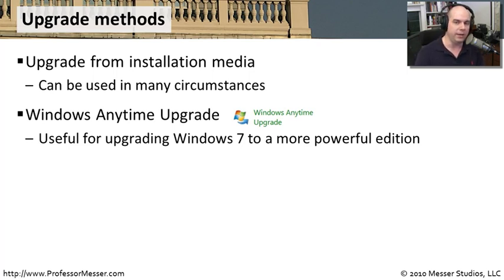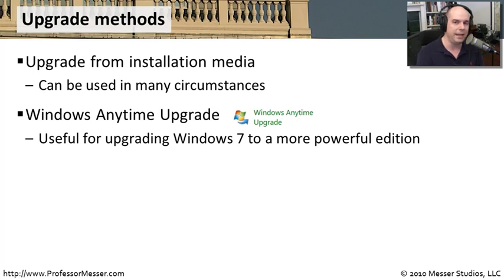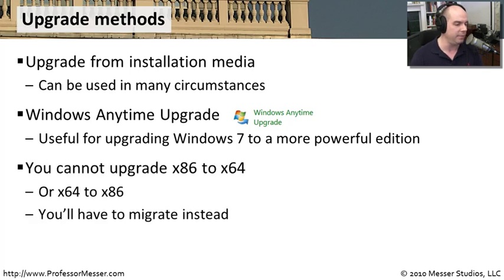If you're already running Windows 7 - say Windows 7 Professional - and you'd like to upgrade to Windows 7 Ultimate, there's an option called the Windows Anytime Upgrade inside your Control Panel. You can take an existing version of Windows 7 and upgrade to a more powerful version. You don't need installation media; you can buy it online, click a button, download it, and have that new version available.